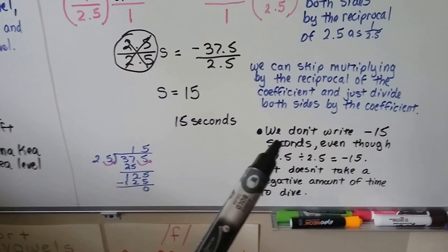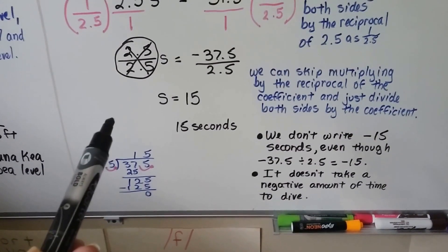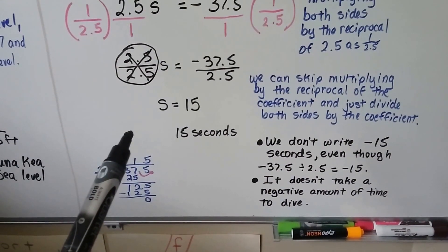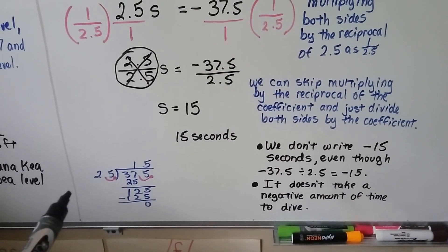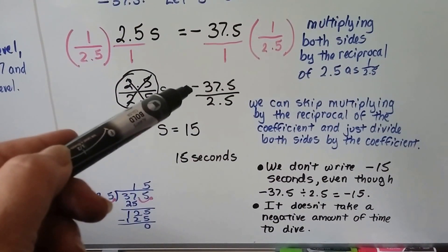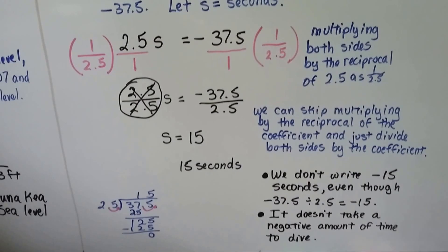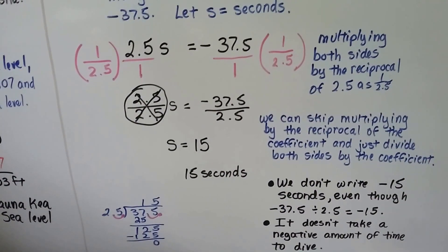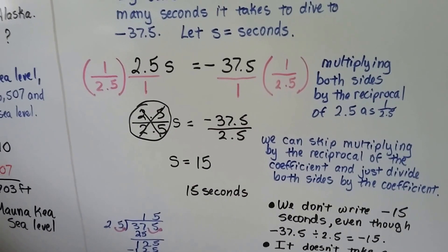Now, we don't write a negative 15, because it didn't take a negative time to go there. The clock didn't go backwards. It doesn't take a negative amount of time to dive. So, don't let things like this little negative fool you. It's just a distance.